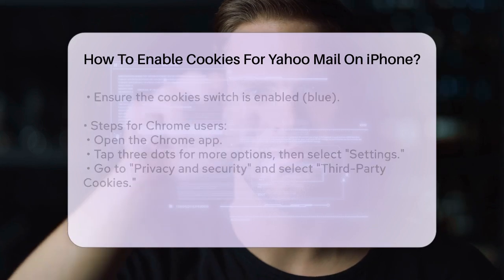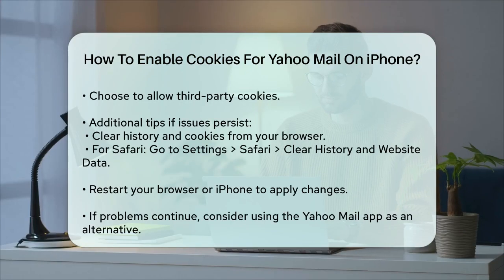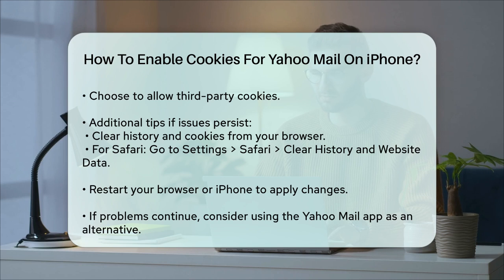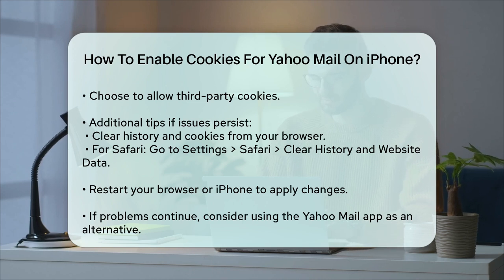Additional Tips. Sometimes, even after enabling cookies, you might still face issues. Here are a few additional steps you can take. Clear the history and cookies from your browser. For Safari, you can do this by going to Settings, Safari, Clear History, and Website Data. Quit and reopen your browser or restart your iPhone to ensure the changes take effect. By following these steps, you should be able to enable cookies and access Yahoo Mail smoothly on your iPhone. If you still encounter problems, consider installing the Yahoo Mail app as an alternative solution.